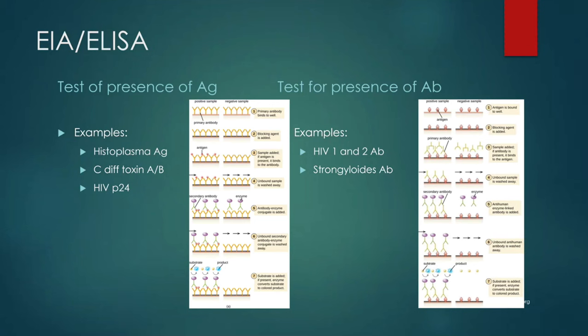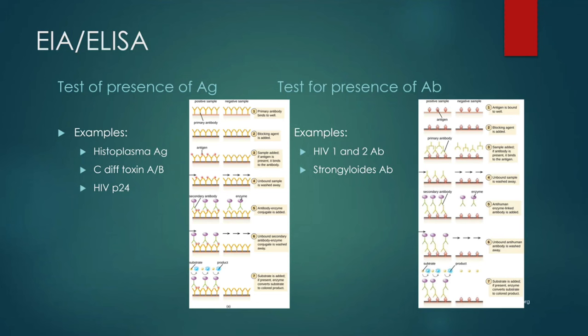An insane amount of your tests are done via immunoassay. Probably the most common are EIAs — enzyme immunoassays — mostly in the form of ELISAs. These come in various forms with benefits and drawbacks. The great thing about ELISA is that you can test for the presence of both antigen and antibody. Tests that detect antigen include histoplasma, C. diff toxin A and B, and HIV p24 antigen.